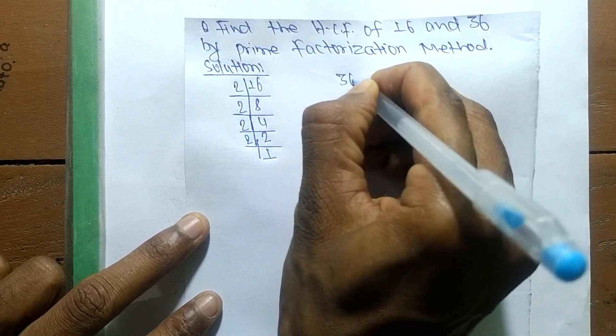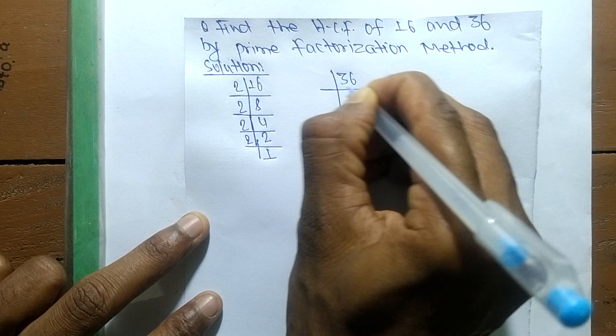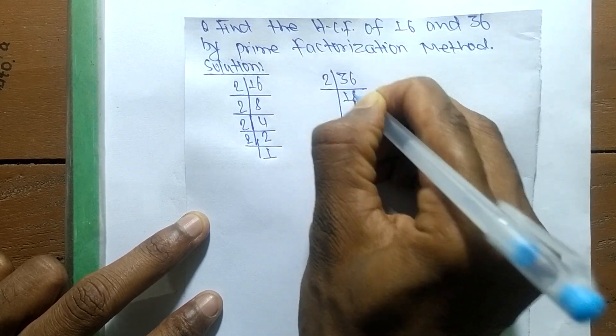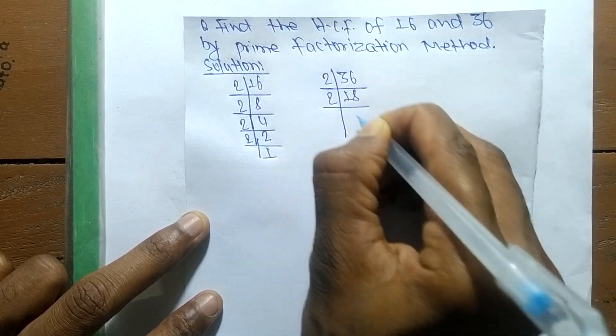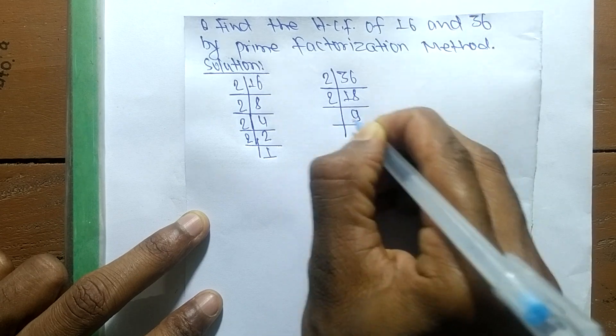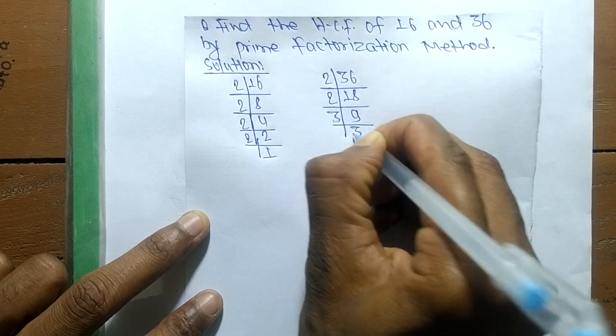The prime factors of 36 are: 2 times 18 means 36, 2 times 9 means 18, 3 times 3 means 9, and 3 times 1 means 3.